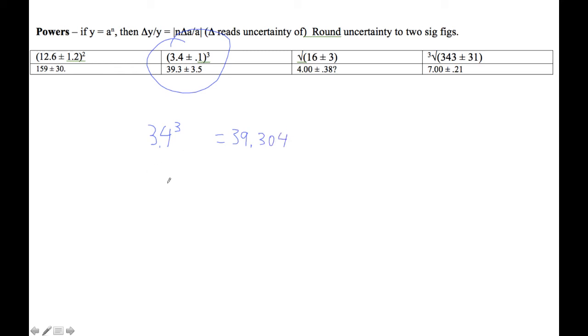Now we'll set up our uncertainty. So uncertainty of y over 39.304 equals, and our n here is 3, so it's the absolute value of 3 times 0.1 divided by 3.4.